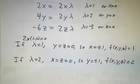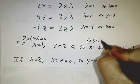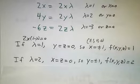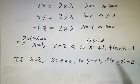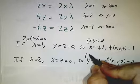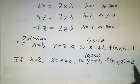If lambda is 2, so these are the points plus or minus 1, 0, 0. If lambda is 2, then y doesn't have to be 0, but x and z do. So these give you the points 0, plus or minus 1, 0. And the function value there is 2.